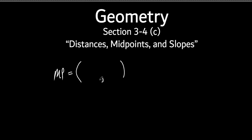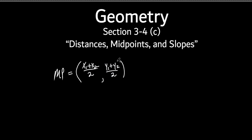A lot of kids get confused on this. I say midpoint and somebody will say, 'Oh, the midpoint is seven.' Does that make any sense? No, it's got to be a point. It's got to be an ordered pair. You've got to have an X and a Y. So how do you find the X part of the midpoint? You take X1 and X2, add them up, and divide by two. Then to find the Y part, you add up the Ys and divide by two.